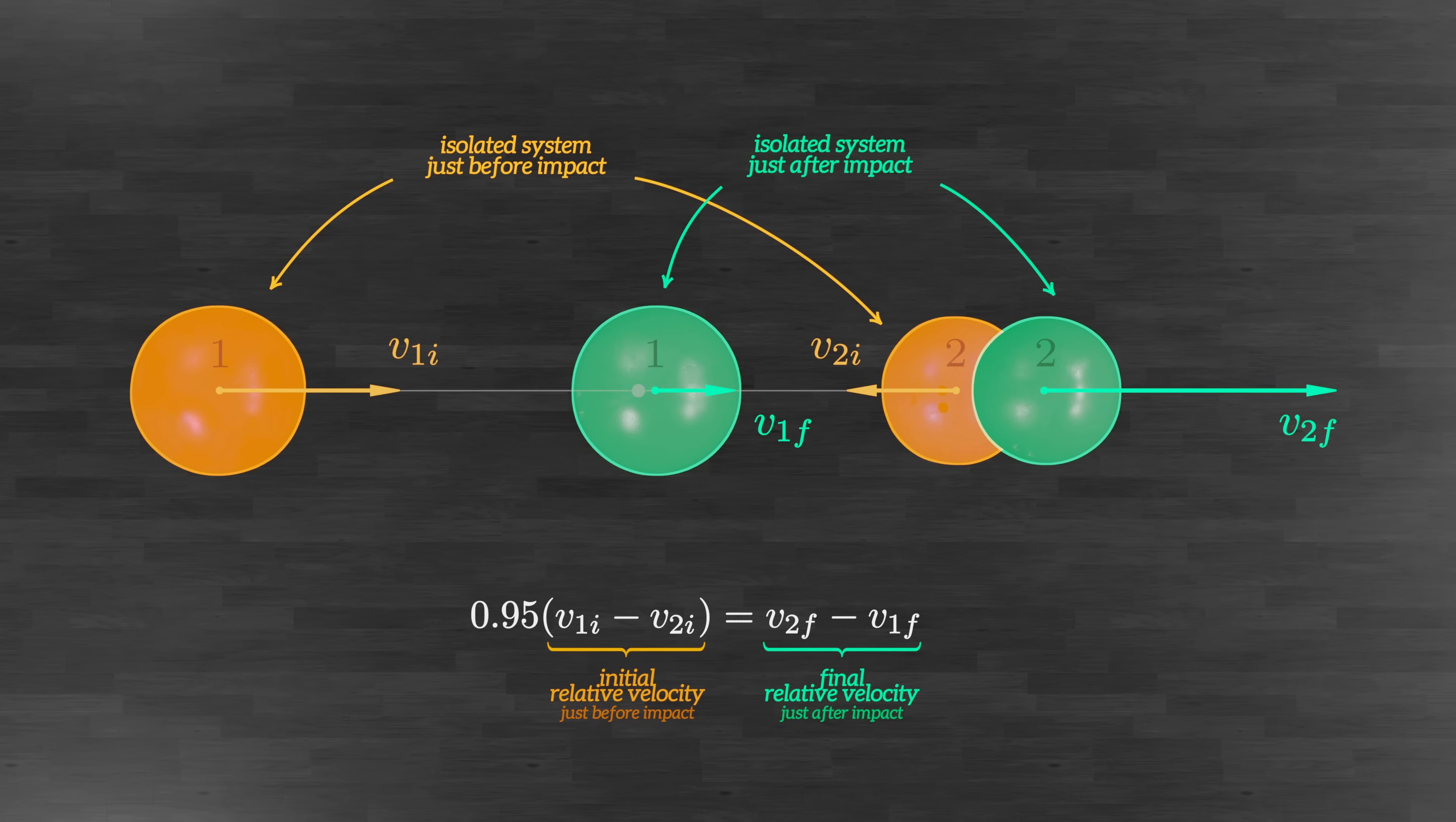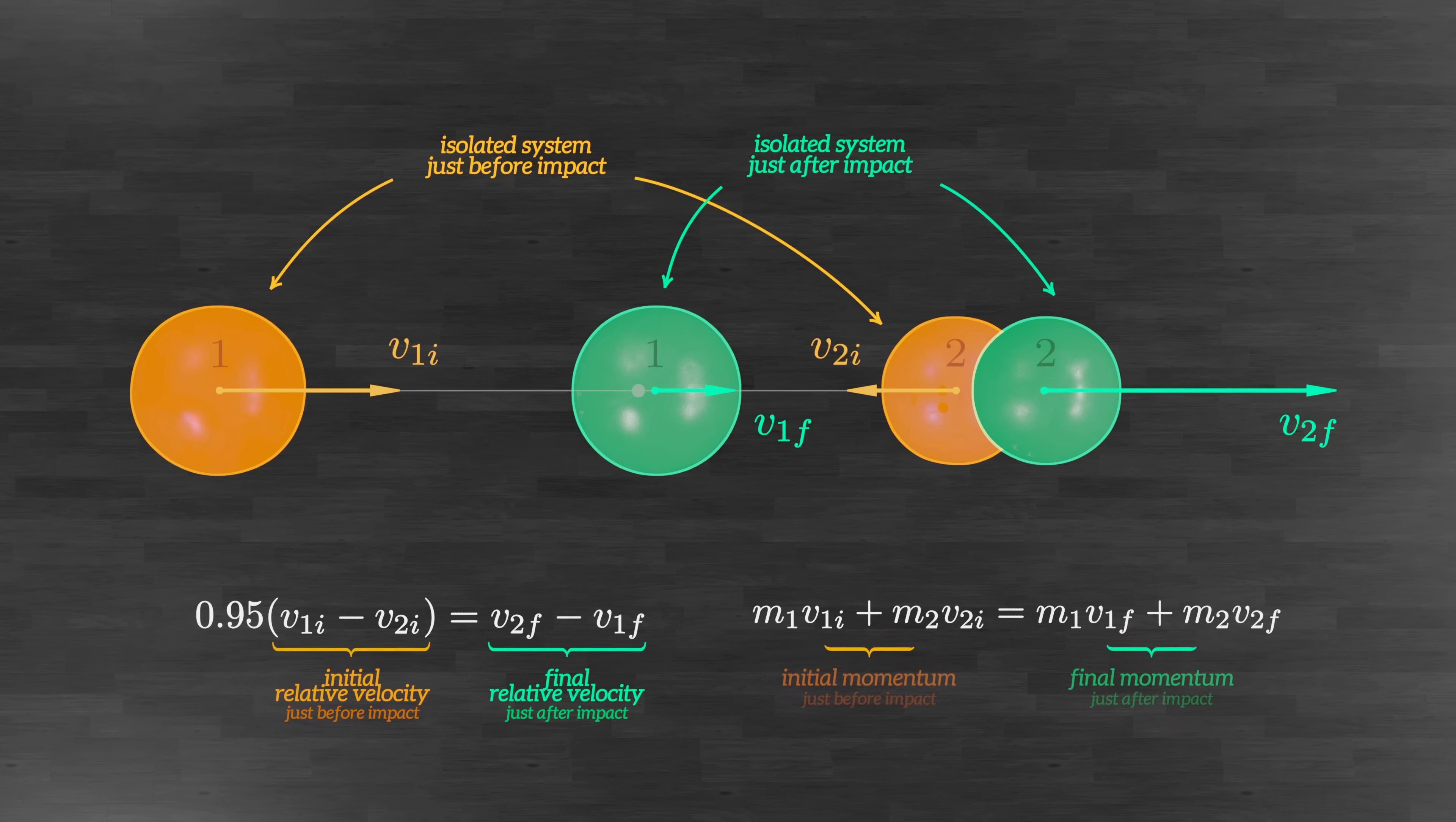By also applying conservation of momentum, we obtain a system of two equations that can be solved to figure out the two unknowns, the final velocities of both balls.